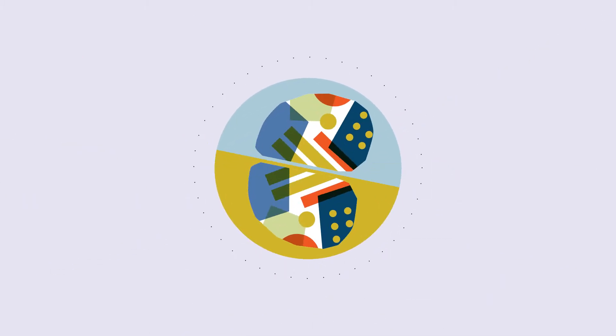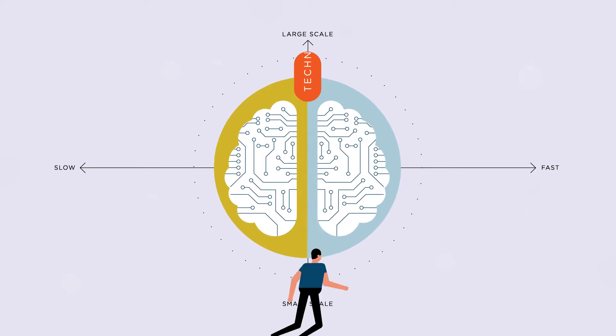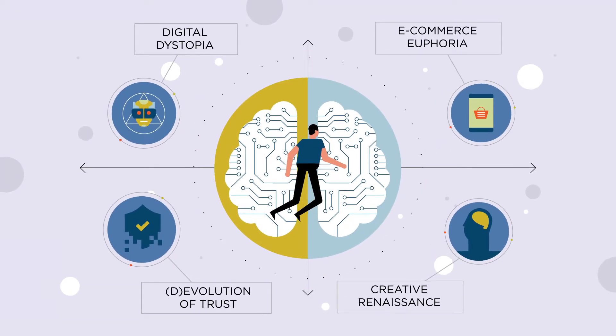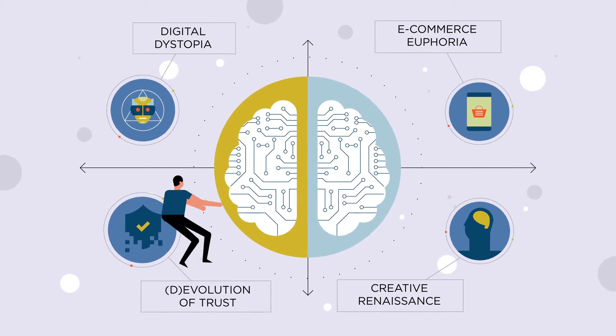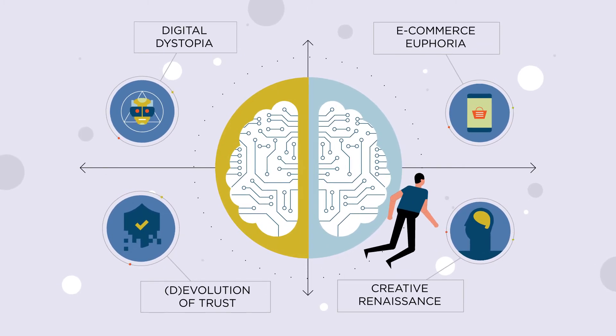For example, digital transformation or technological unemployment courtesy of artificial intelligence to create four different future worlds like digital dystopia, e-commerce euphoria, the devolution of trust and a human creative renaissance.